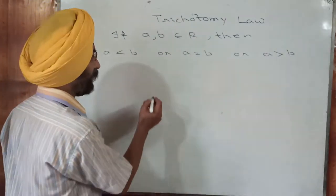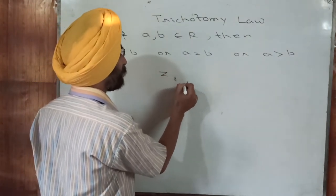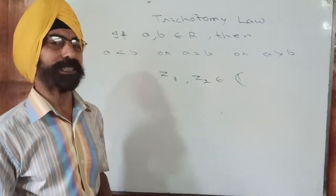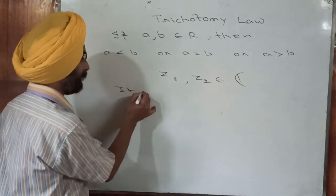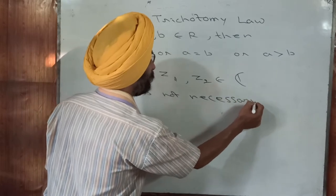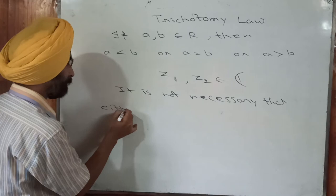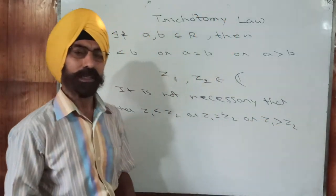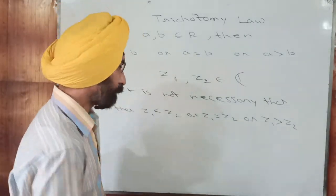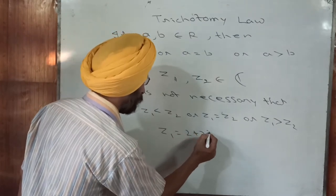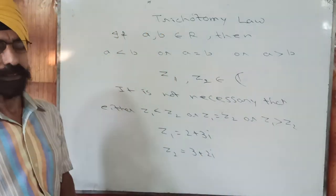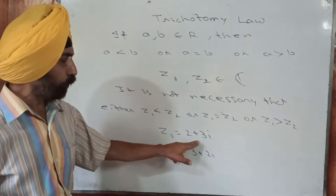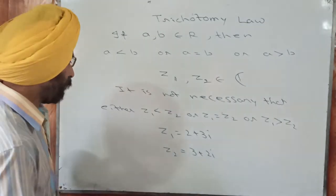Why am I telling you this? Because if there are two complex numbers Z1 and Z2, it is not necessary that either Z1 is less than Z2, or Z1 equals Z2, or Z1 is greater than Z2. All three conditions may fail. For example, if Z1 is two plus three iota and Z2 is three plus two iota — is two plus three iota less than three plus two iota? Is it equal? Is it greater? No — all three statements are wrong. So the law fails.